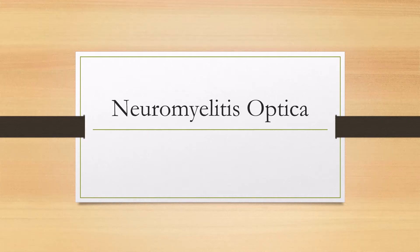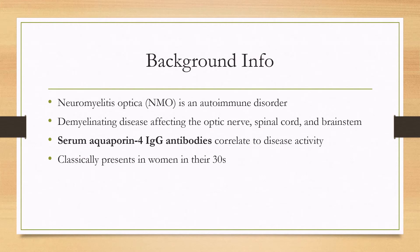Let's talk about neuromyelitis optica. Neuromyelitis optica, or NMO, is an autoimmune disorder characterized by demyelination affecting the optic nerve, spinal cord, and brain stem. There's also necrosis of the cells as well. The characteristic antibody associated with this disease that you need to know is a serum aquaporin-4 IgG antibody.